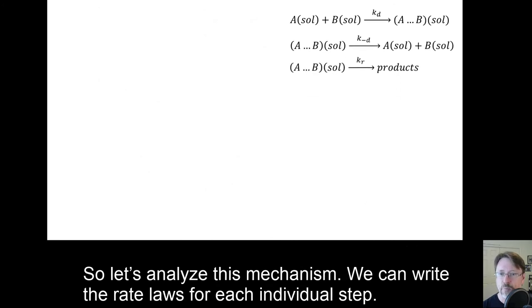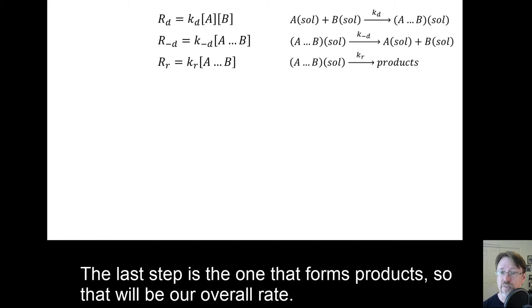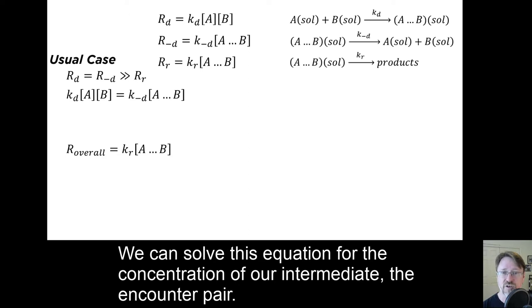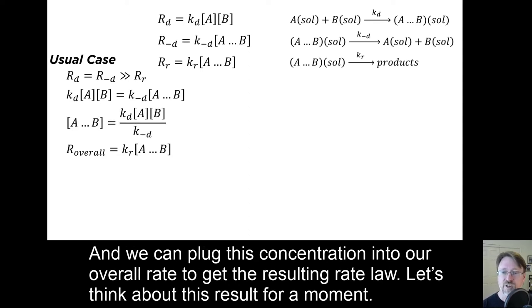So let's analyze this mechanism. We can write the rate laws for each individual step. The last step is the one that forms products, so that will be our overall rate. We said that the first two steps usually form a dynamic equilibrium, so those rates should be equal. We can solve this equation for the concentration of our intermediate, the encounter pair, and we can plug this concentration into our overall rate to get the resulting rate law.